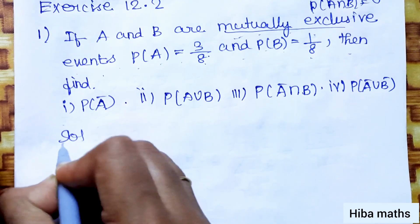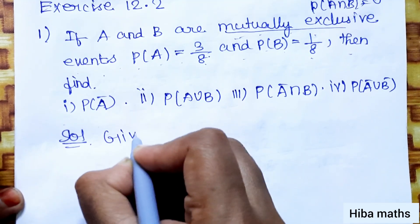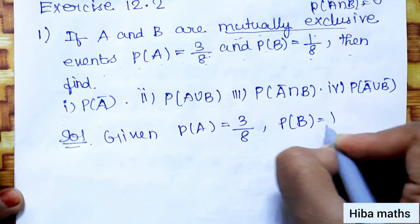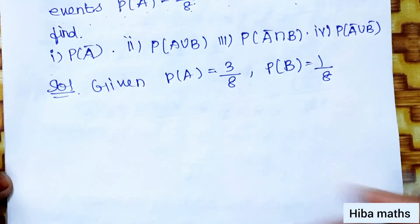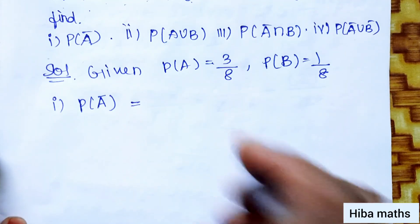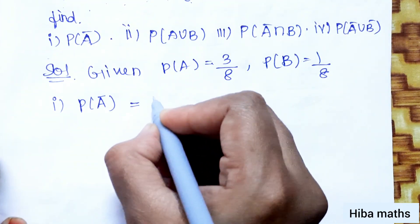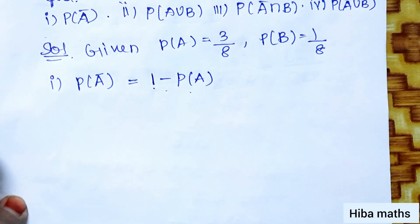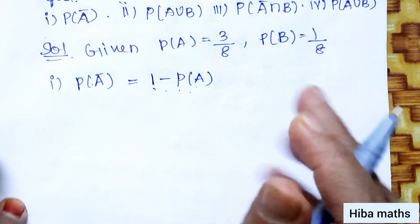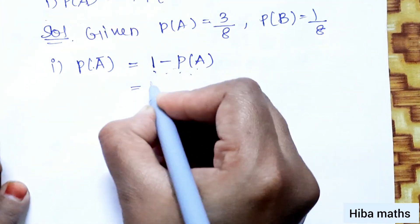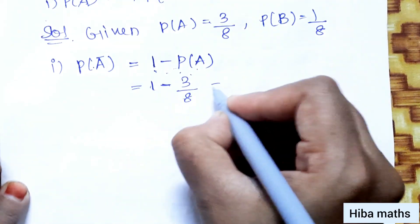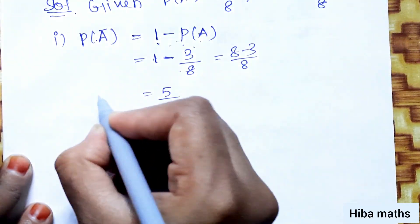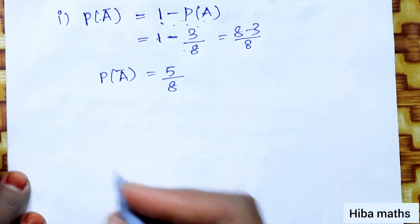Solution: Given P of A is equal to 3 by 8 and P of B is equal to 1 by 8. First question is P of A bar. A bar, that is not of A, is equal to 1 minus P of A. P of A value we know is 3 by 8, so 1 minus 3 by 8 equals 8 minus 3 by 8, that is 5 by 8. This is the P of A bar value.